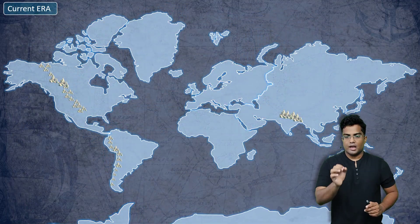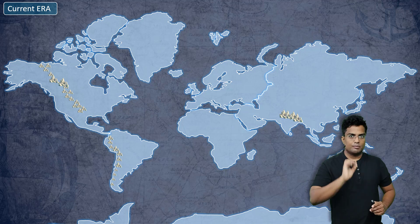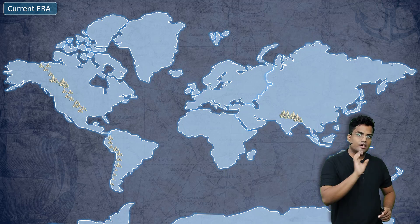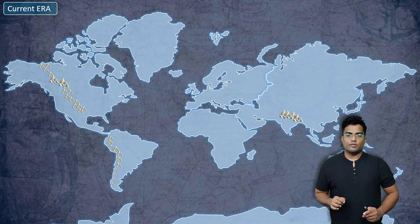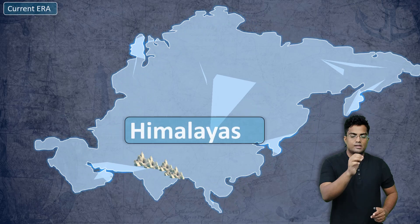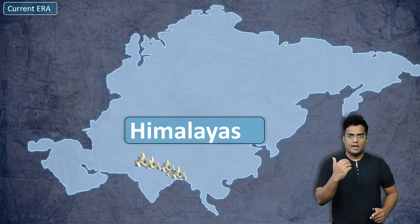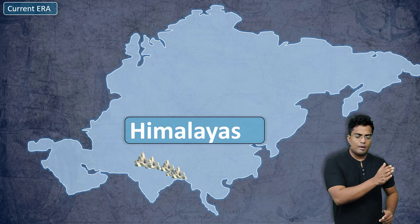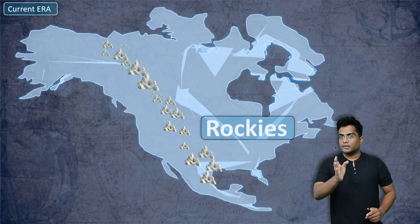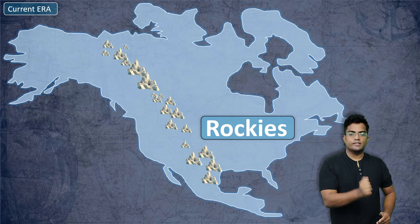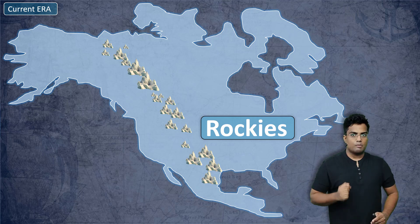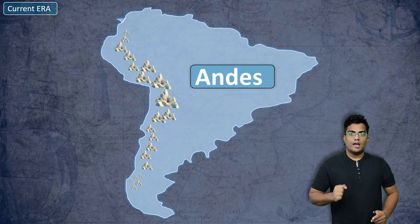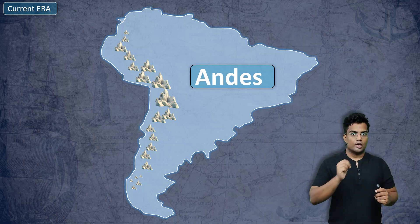Let's discuss three important fold mountains located across the world. There are mountains across North America, some in South America, and some between the Indian and Eurasian plates. The mountains between India and Eurasia are the Himalayas. In North America, we have the Rockies, which is again a set of fold mountains. And in South America, we have the Andes. These are the major fold mountains located across the world.